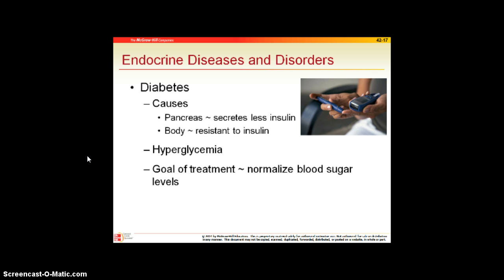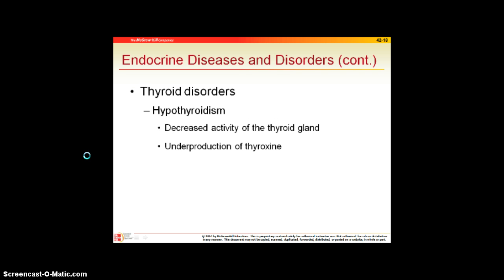Hyperglycemia means high blood sugars. For all diabetics, whether type 1 or type 2, the goal of treatment is to keep a normal blood sugar level. The more normal blood sugar levels are kept, the less likely we'll see complications like vision loss, amputation, and peripheral blood vessel disease.